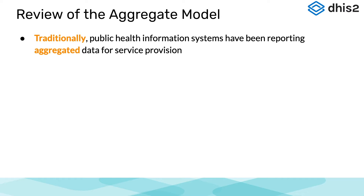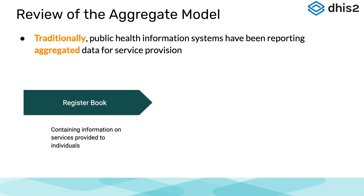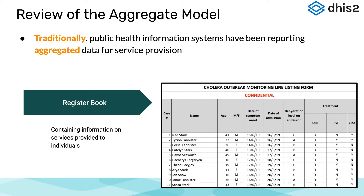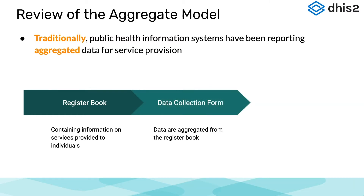To give you an example of the aggregate data flow, the data are often held in a register book or line list, similar to this cholera outbreak monitoring line list, which includes individual level information on patients and the services provided to them. From the register book or line list, the data are aggregated or tallied to a data collection form, similar to the data collection form shown here.